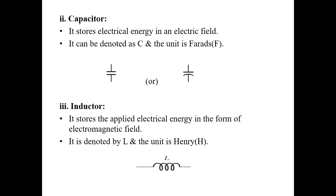A capacitor stores electrical energy in an electric field. It is denoted as C, and its unit is Farad. This is the symbol of the capacitor — the straight line represents the positive terminal and the curved line represents the negative terminal.